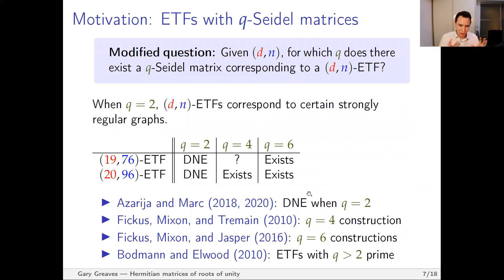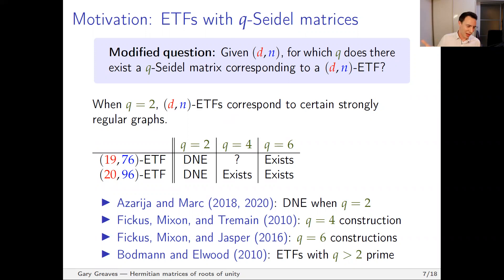To motivate this modified question, consider real ETFs — this is when q equals two, so the primitive root of unity is just minus one. The real case corresponds to something called a strongly regular graph, which is considered an area with not much room for maneuvering. It's still interesting, but since it's been heavily worked on, we try to avoid just sticking to that case. An example to focus on: the cases d=19, n=76, and d=20, n=96.